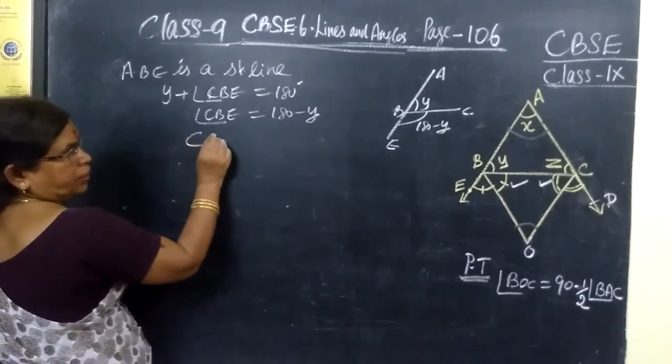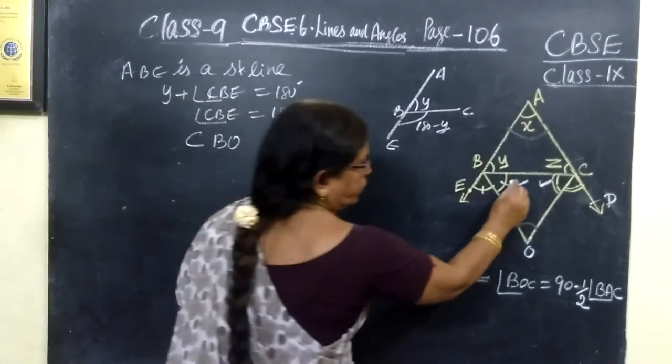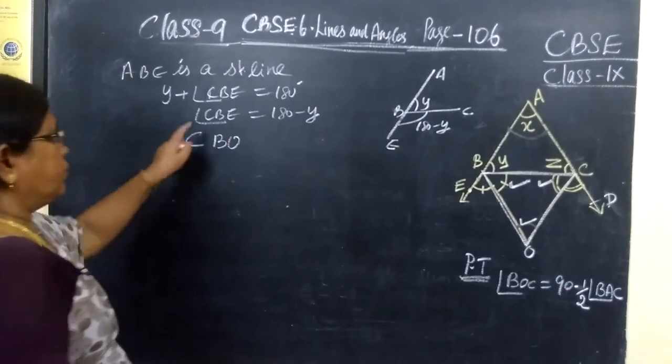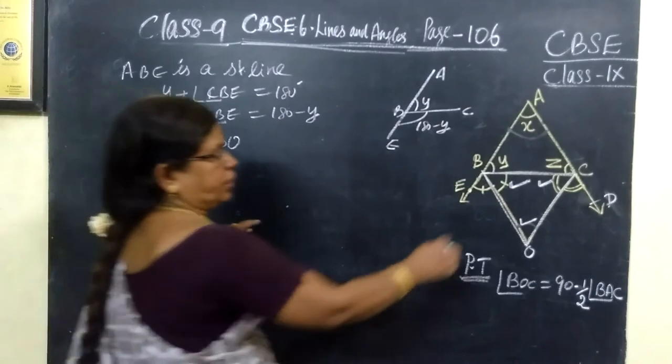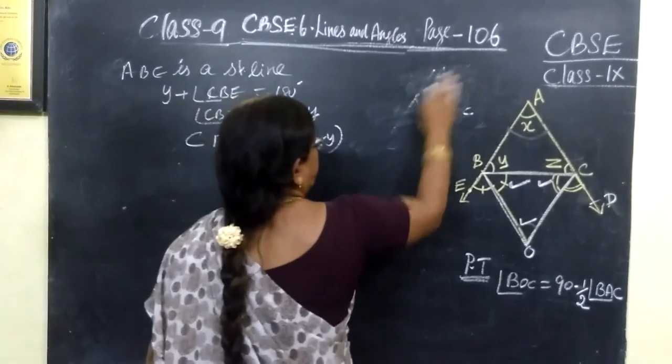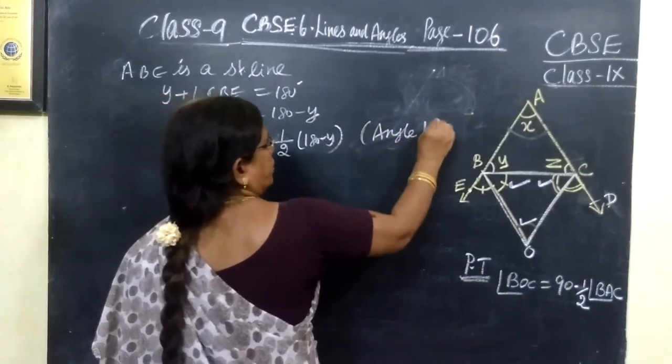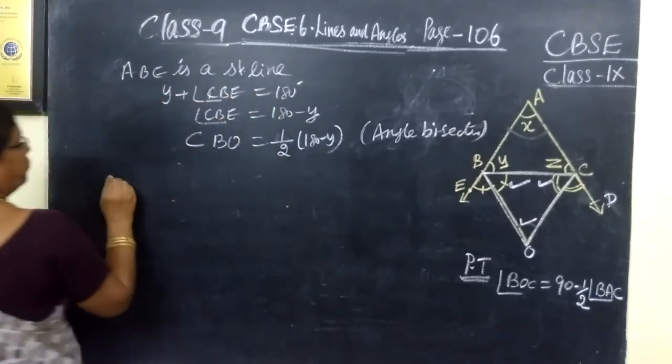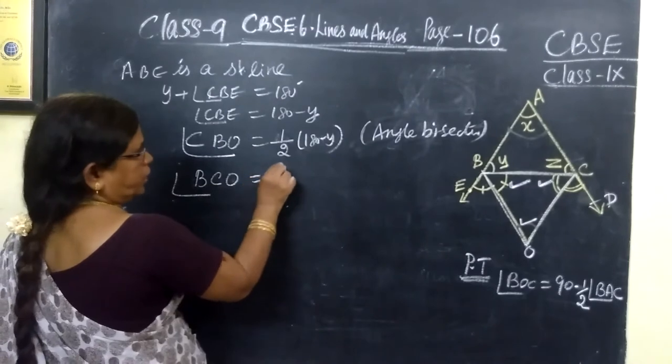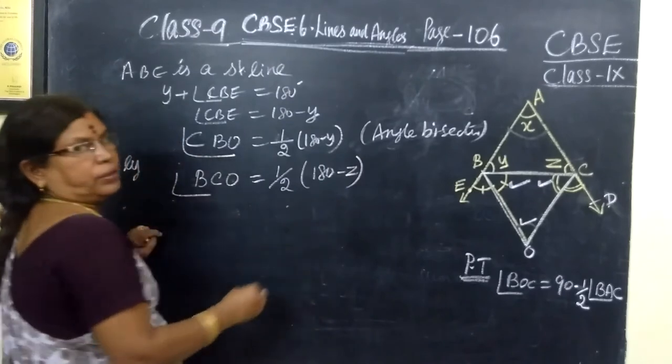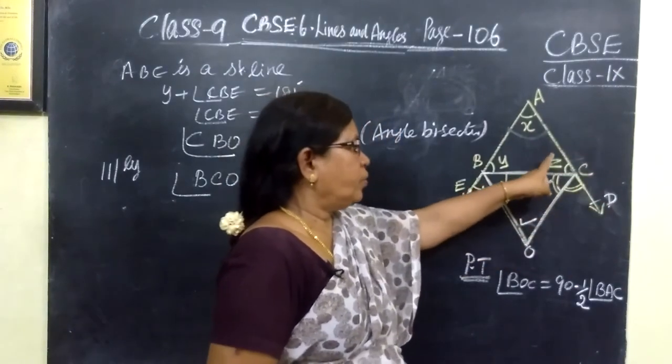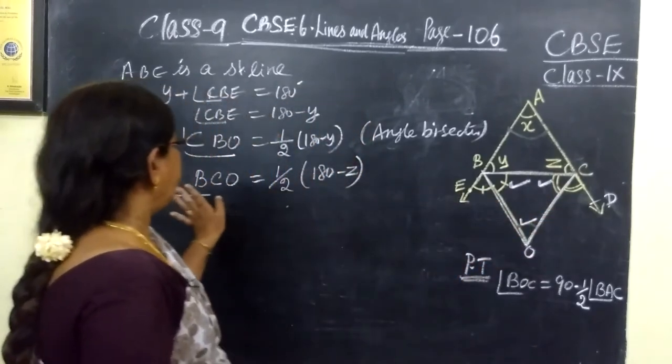So if we need CBO, we need this only because we want to take this triangle. So when we take this triangle, we need these three angles. So CBE equal to this 180 minus Y. Therefore CBO equal to one half of this, because this is angle bisector, 180 minus Y, since angle bisector. So similarly, angle that side BCO equal to half of 180 minus Z. That side means you are taking the straight line AD. So Z, this is 180 minus Z.